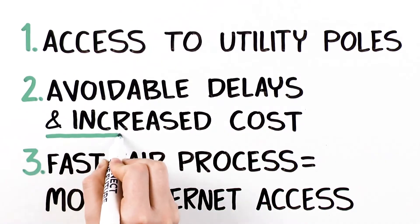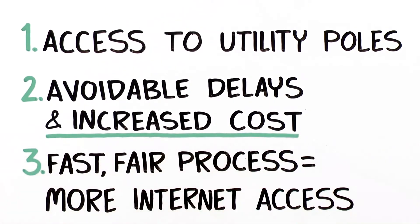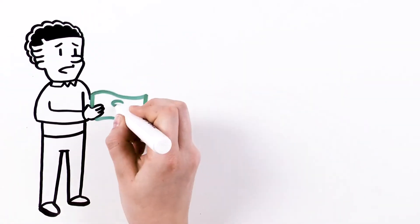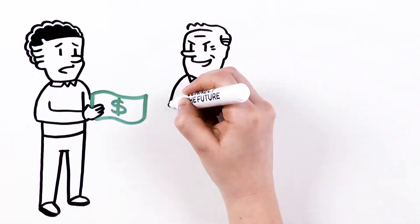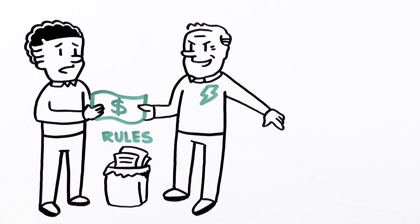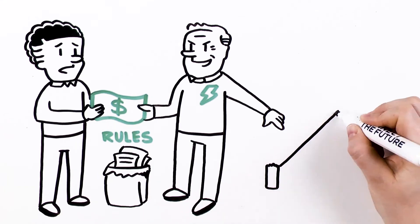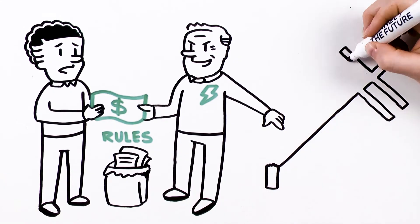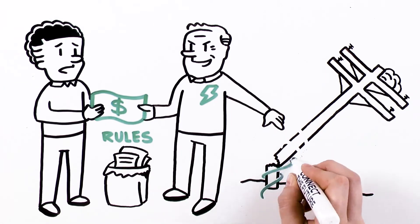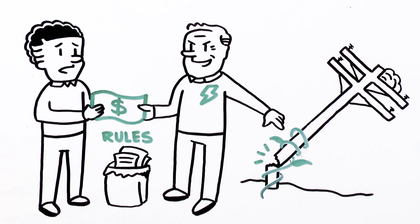In addition to causing delays, the pole attachment process can also be needlessly costly. Broadband providers should pay their fair share of costs to cover their new attachments. But some pole owners don't play by the rules or make up their own when none exist. They require broadband providers to pay the entire cost of replacing poles that haven't been maintained or that are well into, or even beyond, their useful life of 30 to 40 years.